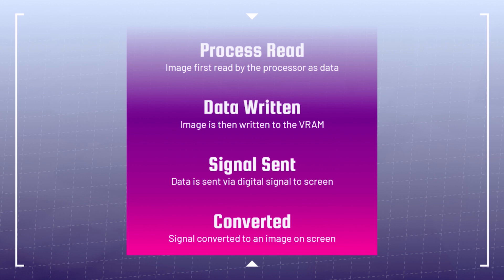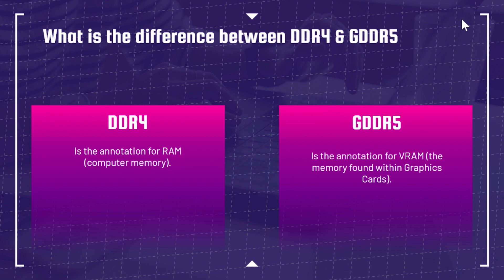VRAM is storing all that data so it doesn't have to do the long haul back and forth — it's doing that in real time. What is the difference between DDR4 and GDDR5? They're completely different. DDR4 is the classification for computer RAM, whereas GDDR5 is the classification for video RAM within your graphics processing unit. Don't confuse those two — GDDR5 is the one you want to look for as far as GPUs are concerned.